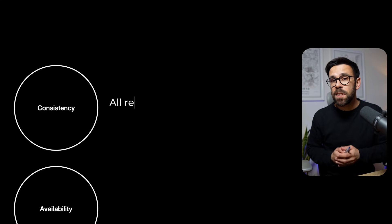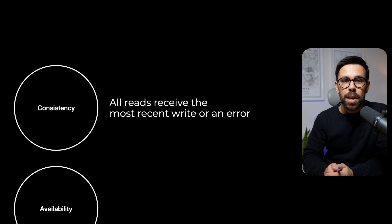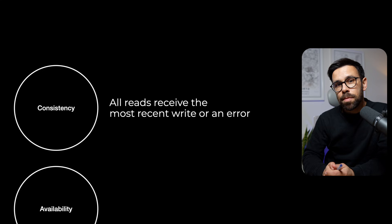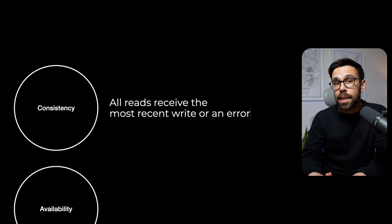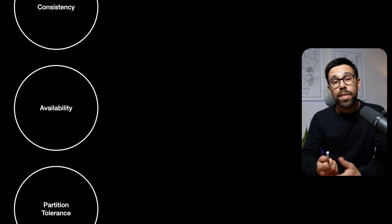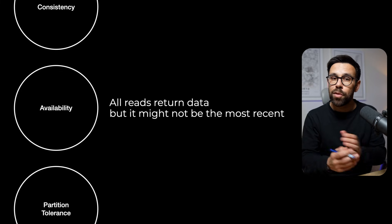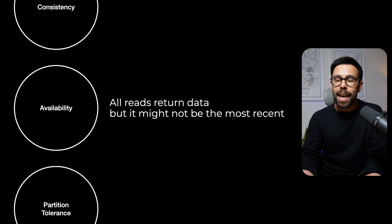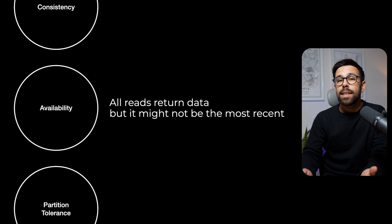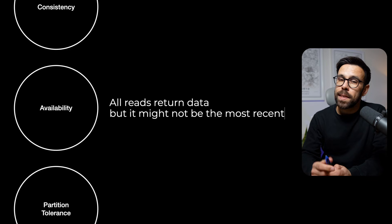Consistency means that when you try to read data, the data you will read is exactly the one that has been written, or you will get an error. In other words, there's no chance of reading data that is outdated. Availability is the idea that you always get a response — if you try to read something from the database, you will always get something. That doesn't mean it's the most recent data, but you always get something.